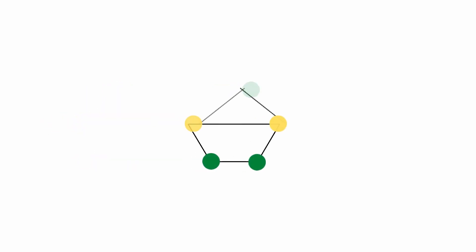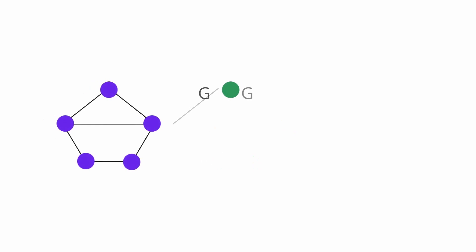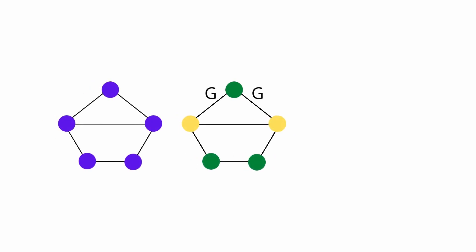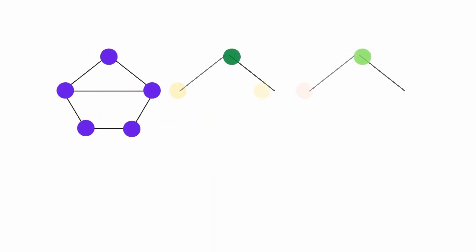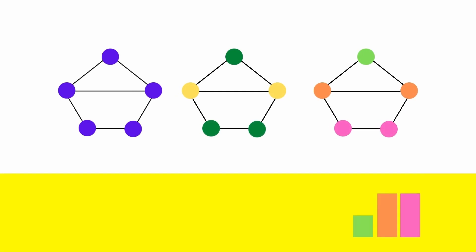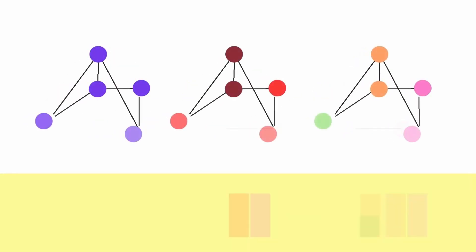Then we have three nodes left. From those three nodes, the top node has a connection to two yellow nodes, so we color it a different color. This is the result. The color refinement does not change, and the color bar graph — the result of the WL test — looks like this.